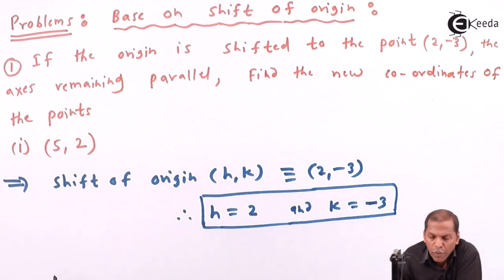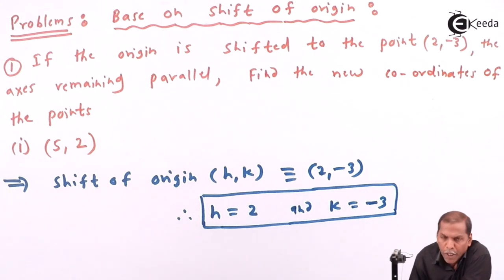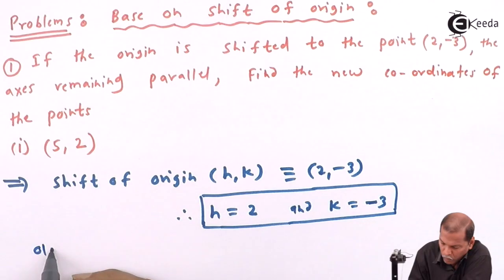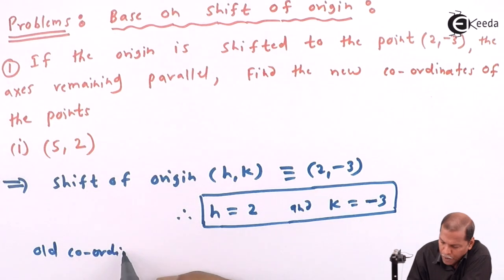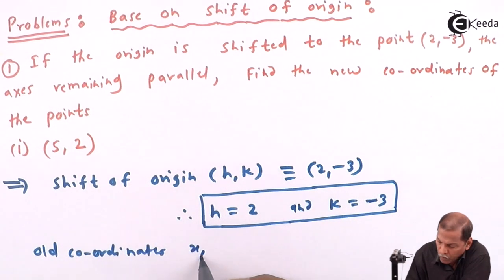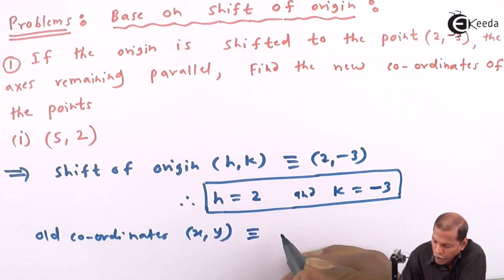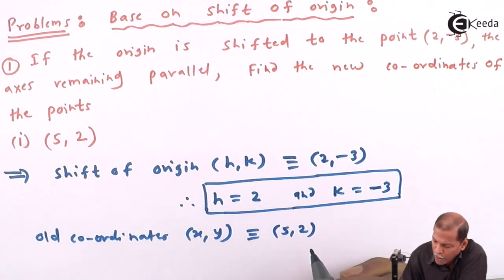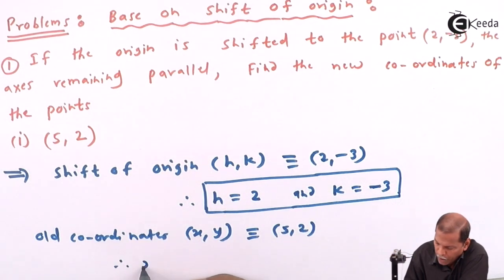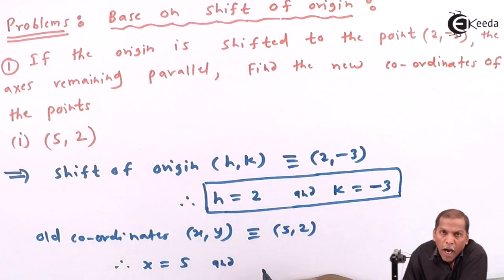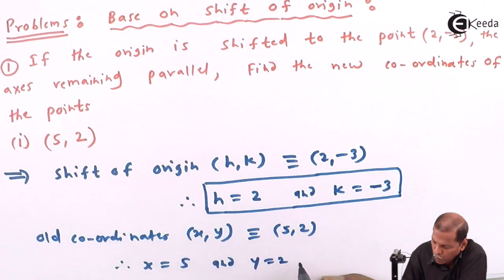Now the question is to find the new coordinates of the point, which means the given point represents the old coordinates. So old coordinates, that is small x, y, are equivalent to (5, 2) — meaning x is equal to 5 and y is equal to 2.